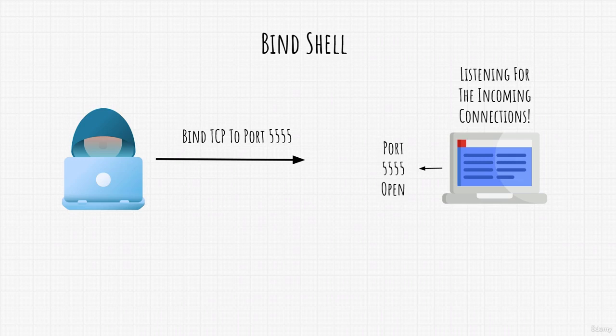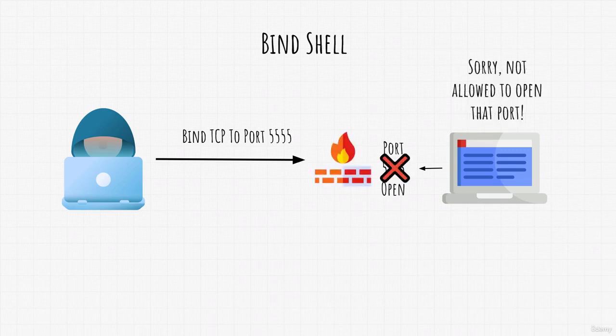However, there is one problem with bind shell, and it is also one of the main reasons why we won't use it that much. That is because a firewall can forbid target machines to open a port. Many firewalls could have a rule that says don't open any random port for security reasons. Therefore, our bind shell would not work even after exploiting the target.